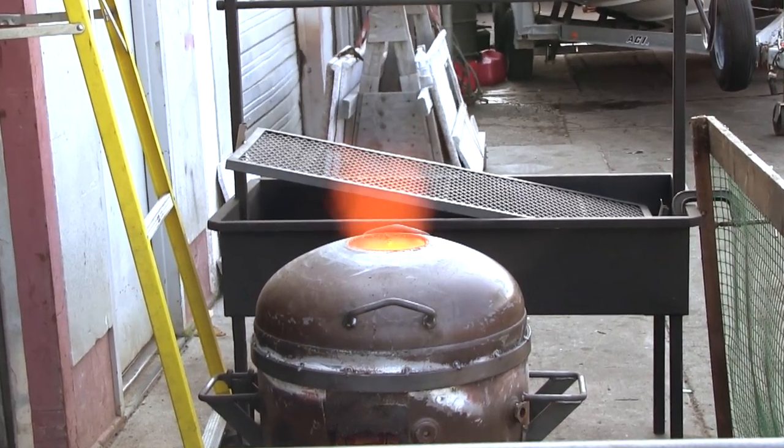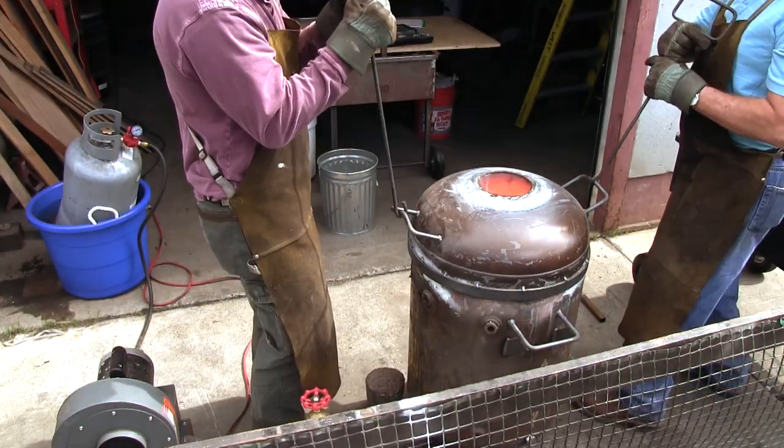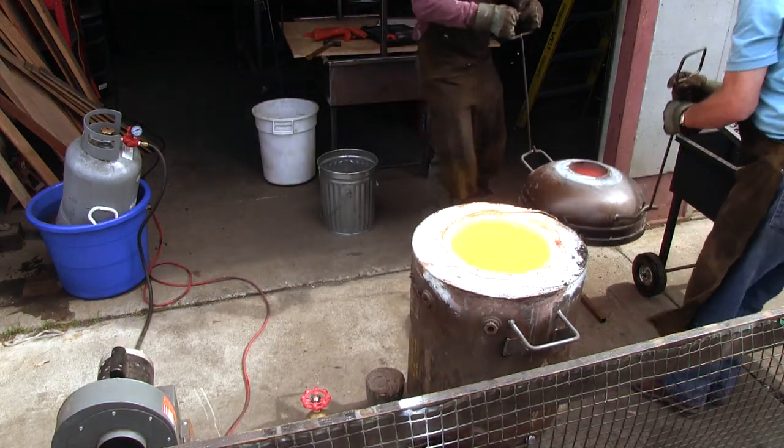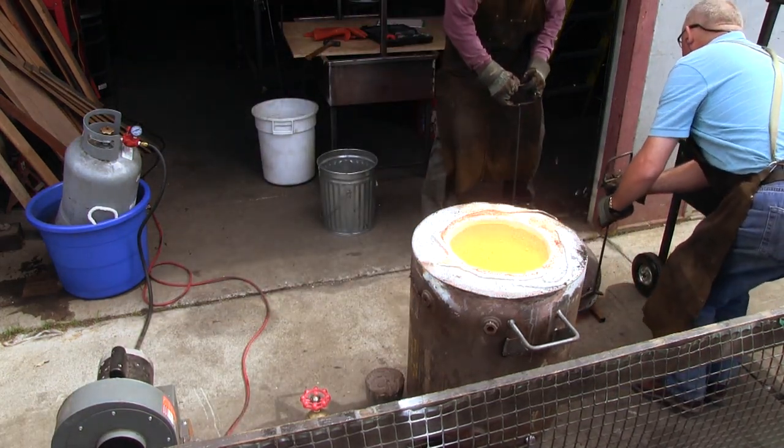We keep it at that temperature for 30 minutes and then let the furnace slowly cool down to 2500 Fahrenheit before removing the crucible.